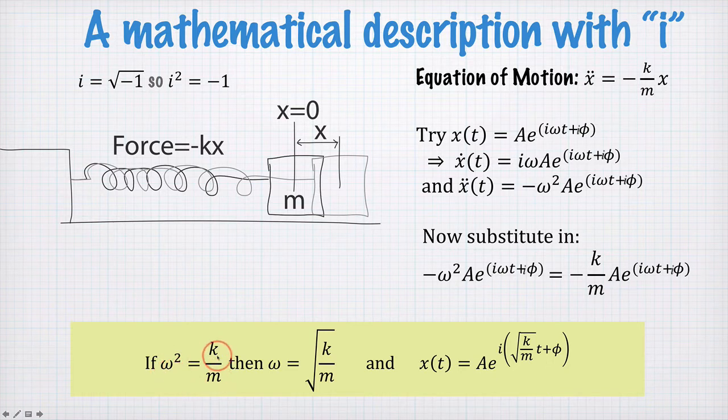So if our omega squared is equal to k on m, then omega is equal to, we'll take the positive root k on m, and we can write x of t is equal to A e to the i root k on m times t plus phi. So there's our solution for x using complex exponential notation.